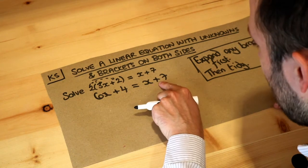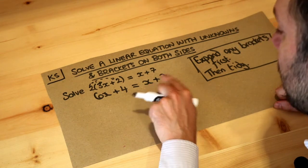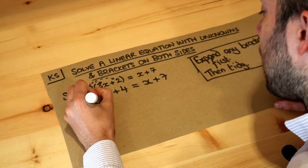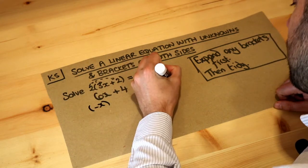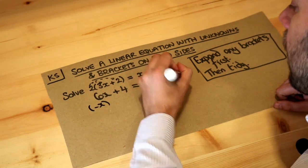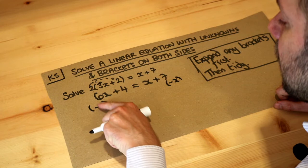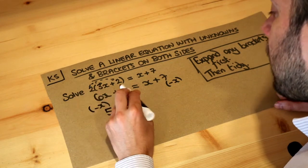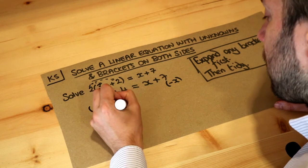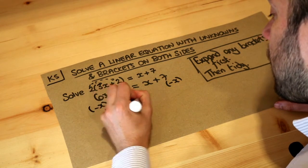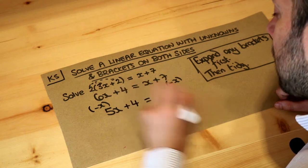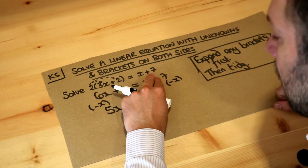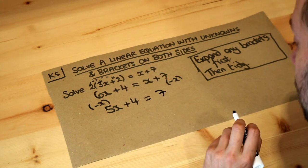We're adding x on the right, so we get rid of it by subtracting x from both sides. 6x minus 1 lot of x is 5 lots of x, so we've got 5x plus 4 still, and by subtracting x from the right we get rid of that plus x, leaving just 7.